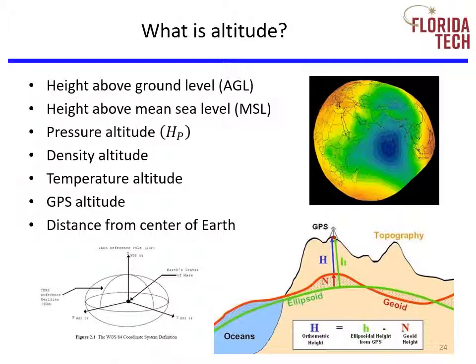Here's a simple question: what is altitude? The answer is not simple — in fact, it's quite confusing. Pilots are familiar with AGL and MSL. Above 18,000 feet, they fly flight levels, which is really pressure altitude. Aeronautical engineers are mainly concerned with density altitude because that's what the engines experience, which affects aircraft performance. There's also temperature altitude and GPS altitude. The Earth is not a perfect sphere — it's more of an ellipse and not a uniform ellipse — so the answer to our simple question is not so simple.